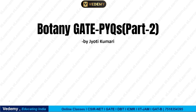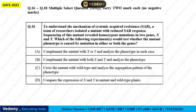In this video we are going to continue with GATE previous year questions — this will be Part 2. The next question is again an MSQ type — Multiple Select Question — with multiple correct options. This is a benefit because if you are wrong there is no negative marking, so you will not lose marks. It is a two-mark question.